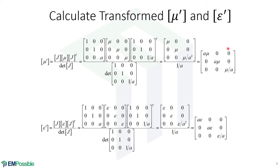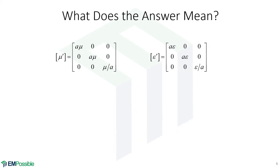The determinant of our Jacobian ends up just being 1 over a. And in the end, we end up with a permeability tensor that looks like this. And we have really the same looking permittivity tensor. Let's look at those in a bit more detail. So what does this mean? Well, right away, we see that we have two directions that have the same permittivity and permeability and a third one that is different.